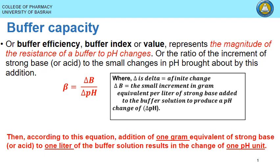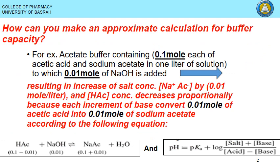For example, a phosphate buffer is a strong buffer with good buffer capacity, while a bicarbonate buffer has weak buffer capacity. This means the phosphate buffer can resist higher additions of acid with only a small pH change, whereas with a bicarbonate buffer, even a small addition of acid will destroy the buffer system.